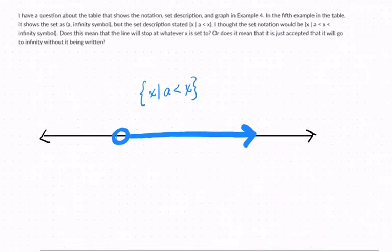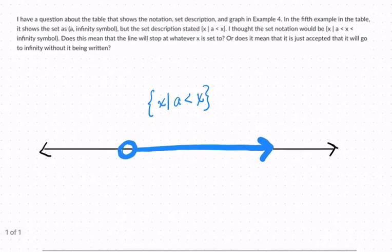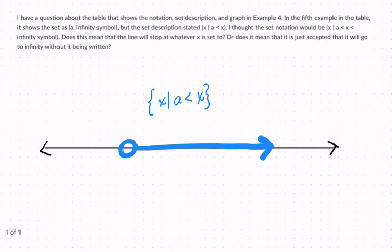Okay, so let me just zoom in here. It says, I have a question about the table that shows the notation, set description, and graph in example 4.